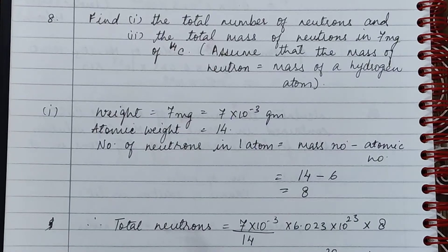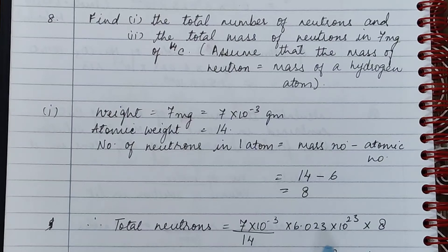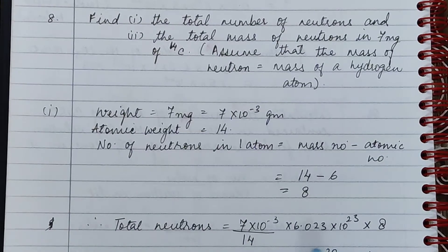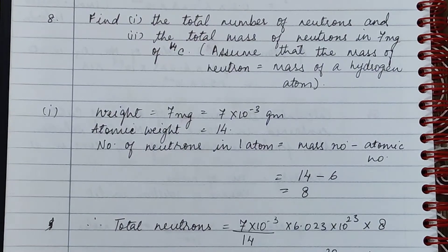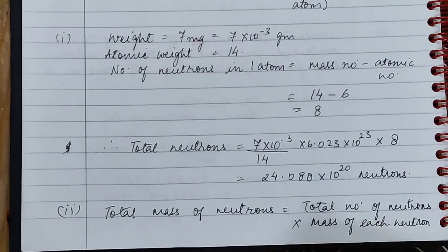The total number of neutrons equals 7 into 10 to the power minus 3 divided by 14, which gives the number of moles of carbon-14. Multiplying by Avogadro's number gives the total number of atoms of carbon-14. Multiplying that by 8 neutrons per atom gives the total number of neutrons in 7 milligrams of carbon-14, which equals 24.088 into 10 to the power 20 neutrons.